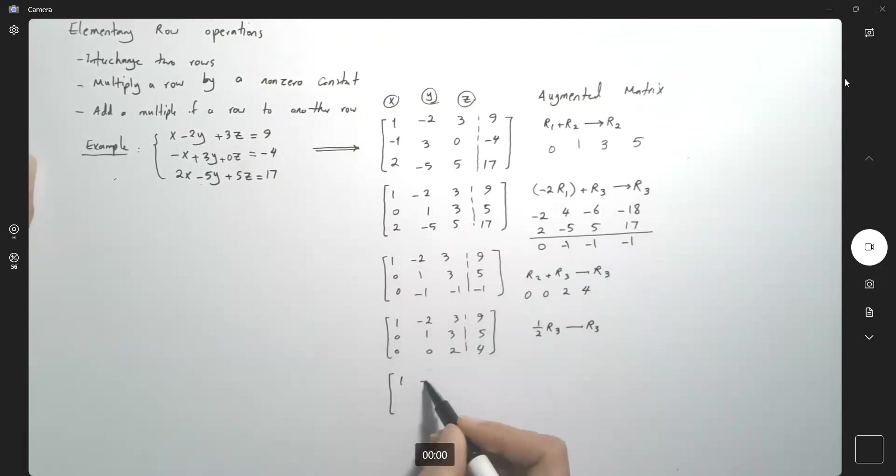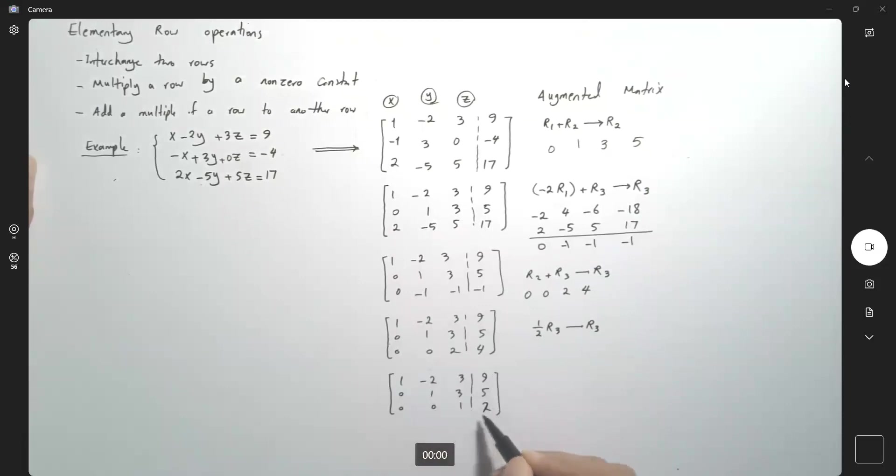So I have 1, negative 2, 3 and 9, 0, 1, 3 and 5, 0, 0, 1 and 2. Very good. So let us rewrite this.